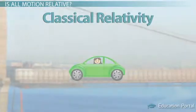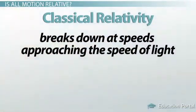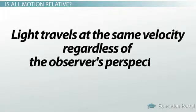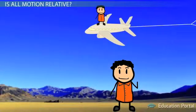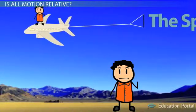Classical relativity breaks down at really high speeds, for example, the speed of light. Several observations and numerous experiments have shown that light travels at the same velocity regardless of the observer's perspective. Whether the observer is standing still or moving, the speed of light appears to be the same.